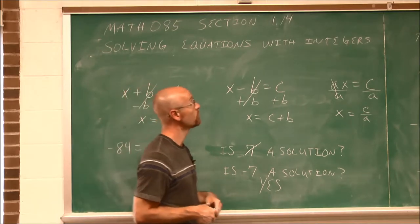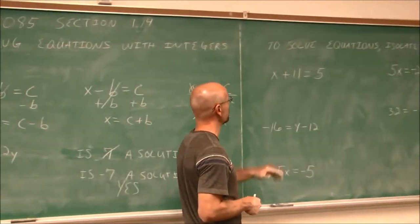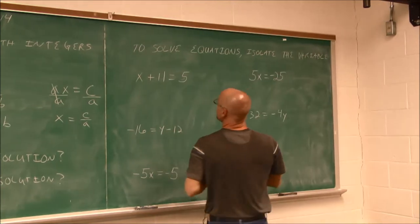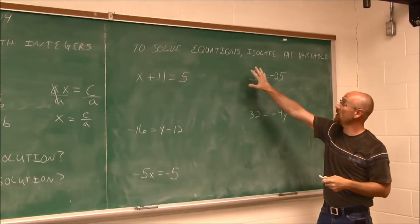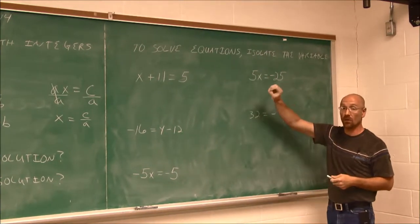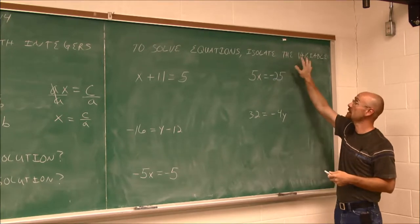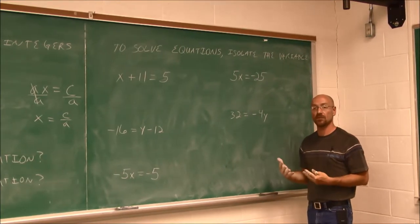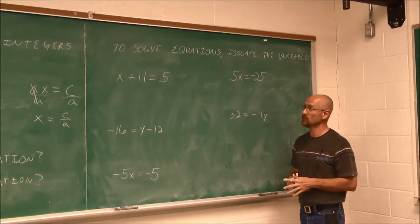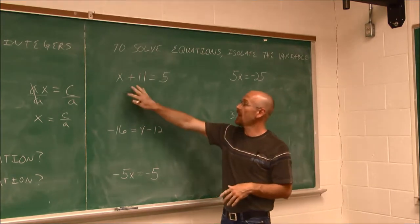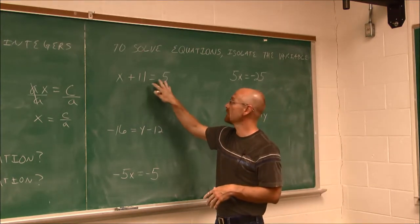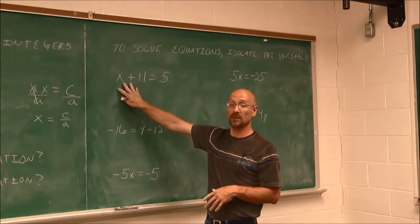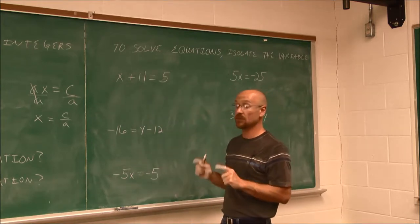We can see how solutions may end up being a negative integer. Let's look at some examples. To solve an equation, our goal — our objective — is to isolate the variable, and we do that by performing the opposite operation from what we see. If I have x plus 11 equals 5, I want to get x by itself — that's my number one objective.